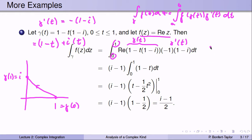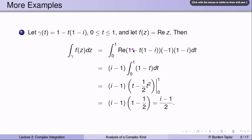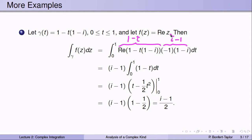To evaluate this integral, we need to find the real part of (1-t)(1-i). The real part is 1-t, and we multiply by minus(1-i), which is the same as (i-1). Pulling the constant (i-1) out of the integral, the integral of (1-t) dt has antiderivative t minus one-half t squared. Evaluating from 0 to 1 gives (i-1) times one-half, so the value of the integral is (i-1)/2.